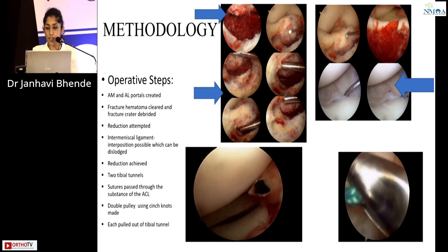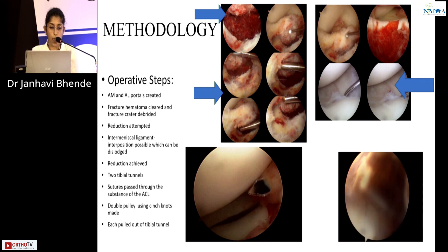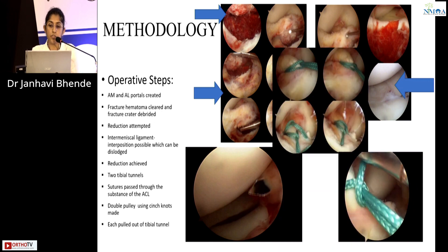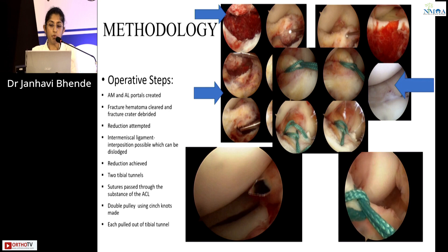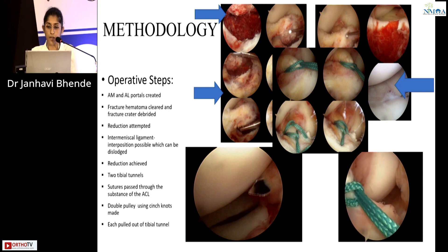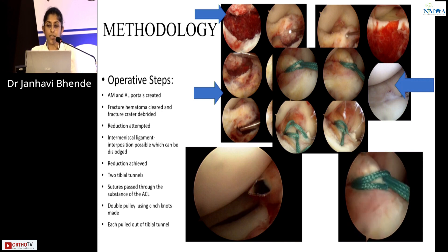Cinch knots are created as can be seen in the video, and two such cinch knots are created. The sutures are then pulled out of the tibial tunnel to create the double pulley. The double pulley then pulls down on the fracture fragment, creating even compression on the fracture. The sutures are then tied over the anterior cortex of the tibia.